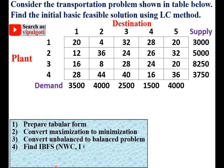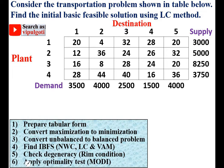Now let's revise the steps for the transportation problem one by one. First, prepare the table — it is already in standard form. Here you can see the factory having different supply or capacity, the destination having different demand, and these are the transportation costs. It is already in tabular form.